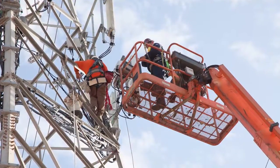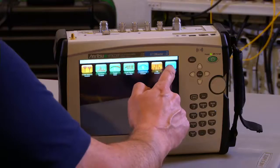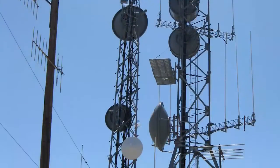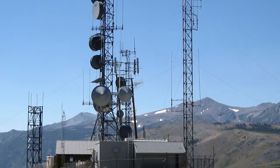One less truck to roll, one less tower crew to call. Cellular technicians now have the ability to test for interference and high noise floor from ground level by tapping into the CPRI link.